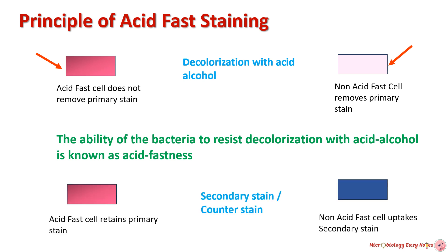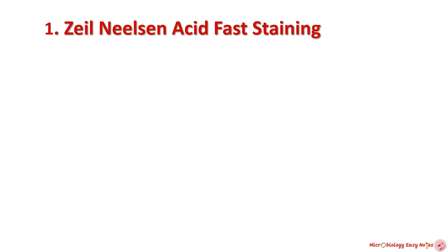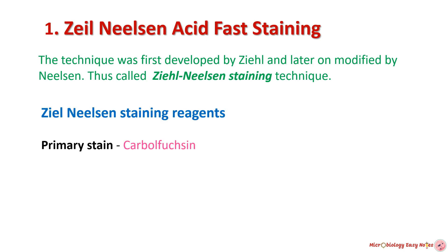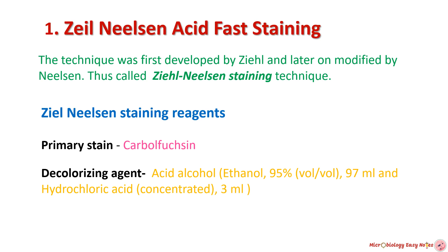After the decolorization step, a counter stain is used. Acid fast cells reject the counter stain color and retain the color of the primary stain, while non-acid fast cells take up the color of the counter stain. Now we will discuss Ziehl-Neelsen staining. This technique was first developed by Ziehl and later modified by Neelsen, thus called Ziehl-Neelsen staining. Reagents used are: carbol fuchsin as the primary stain, giving pink or reddish-pink color; acid alcohol as the decolorizer, which is a solution of ethanol and hydrochloric acid in distilled water; and methylene blue as the counter stain, giving blue color.